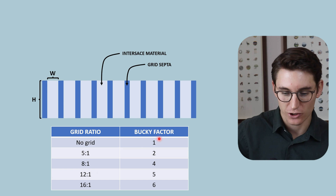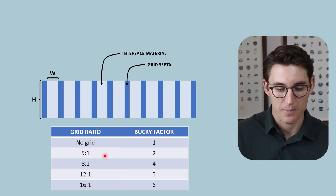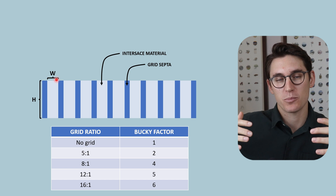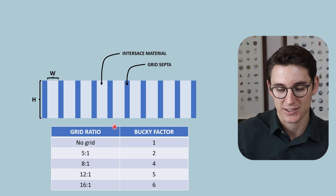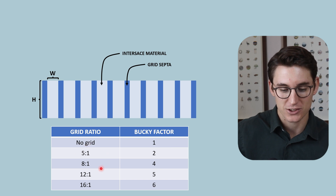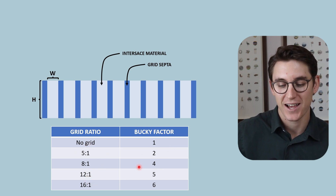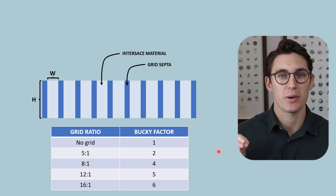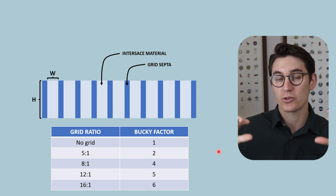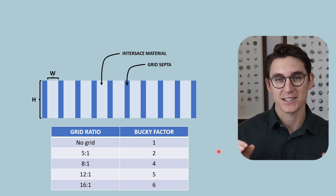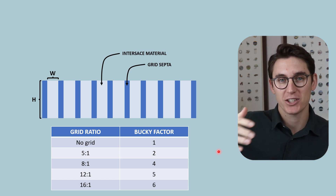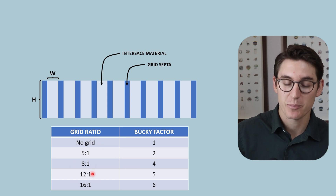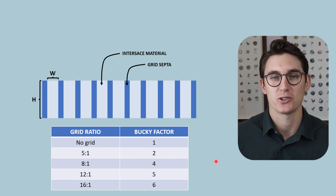We can use our grid ratio to determine the required Bucky factor. As grid height increases or interspace width decreases, the grid ratio increases and we require more exposure to achieve the same detector signal. Unlike collimation — which reduces scatter and reduces patient dose — grids reduce scatter reaching the detector but at a cost: we must increase patient exposure and ultimately patient dose to maintain the same detector exposure. So grids give us a better image, but at the cost of increased dose to the patient.